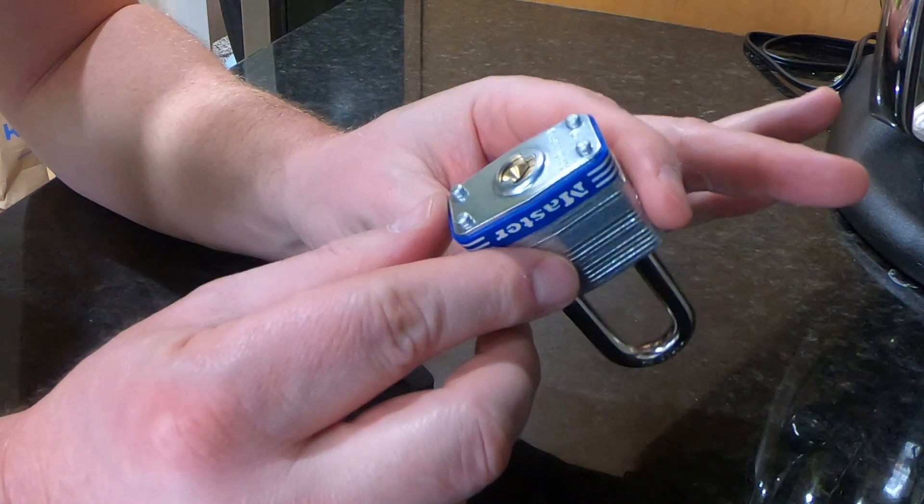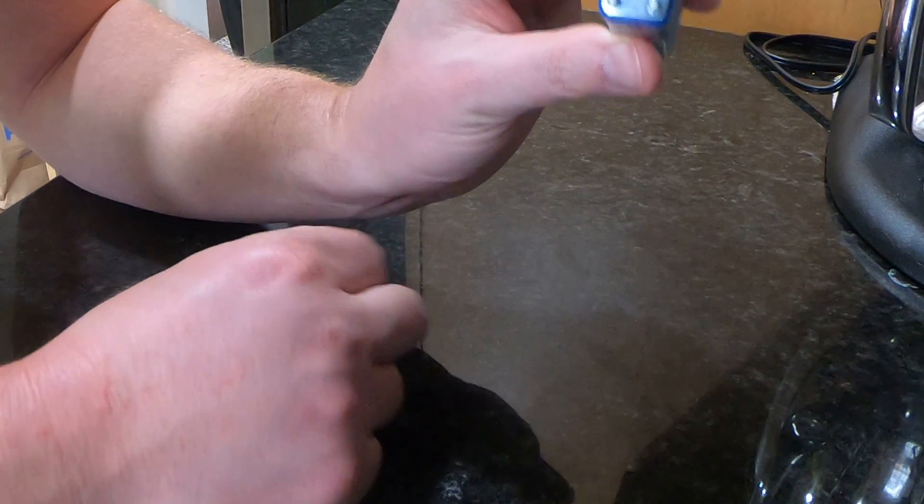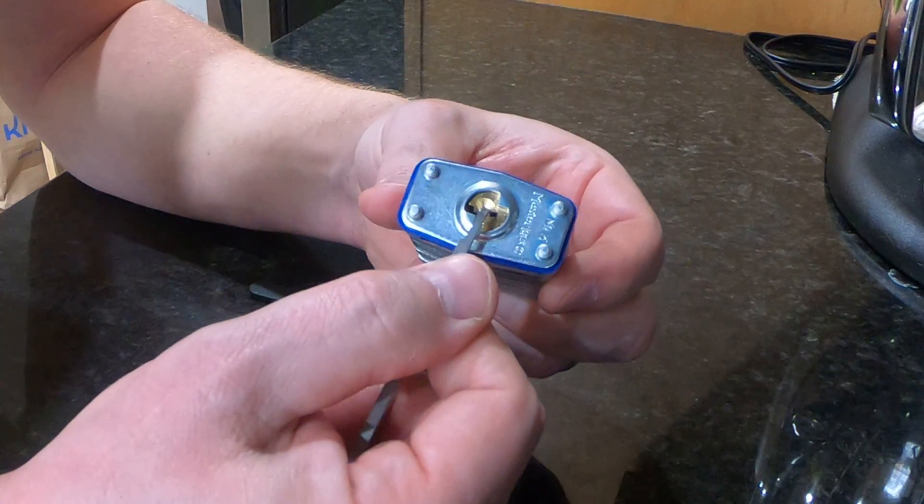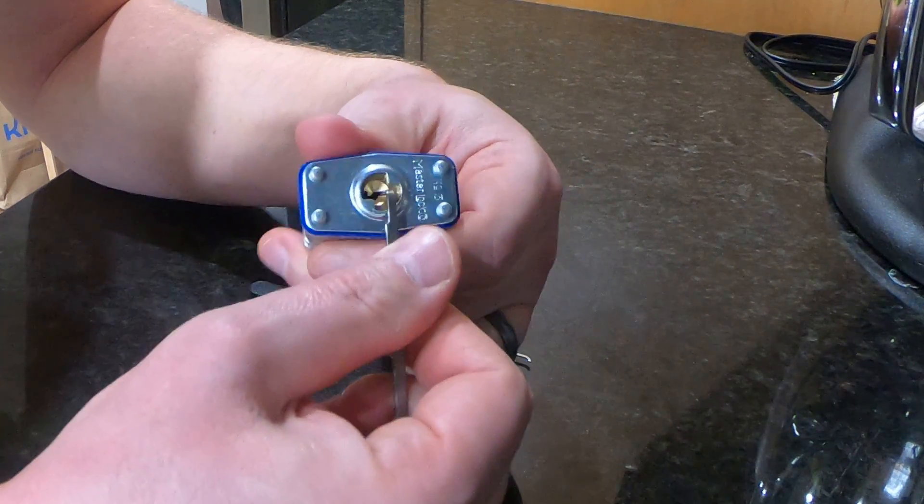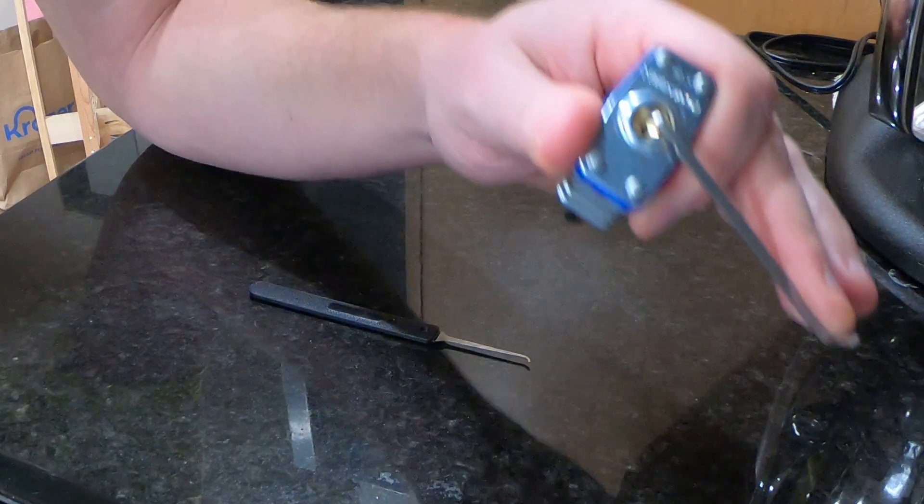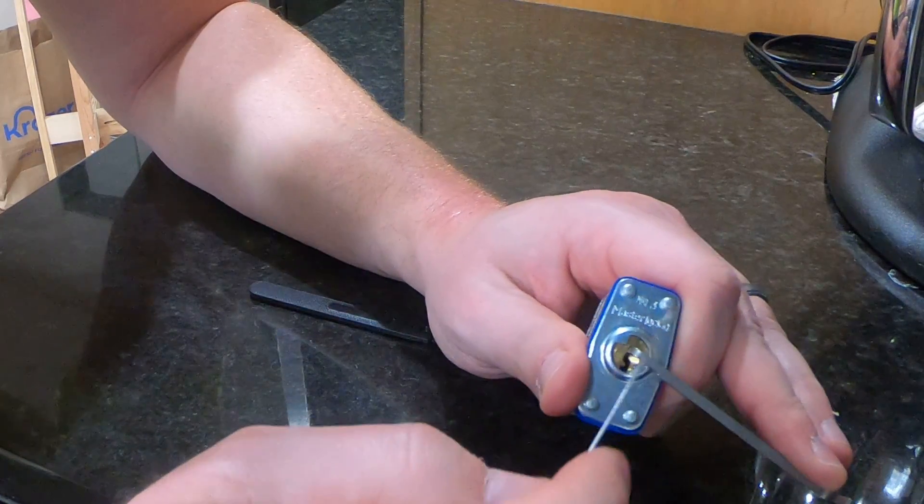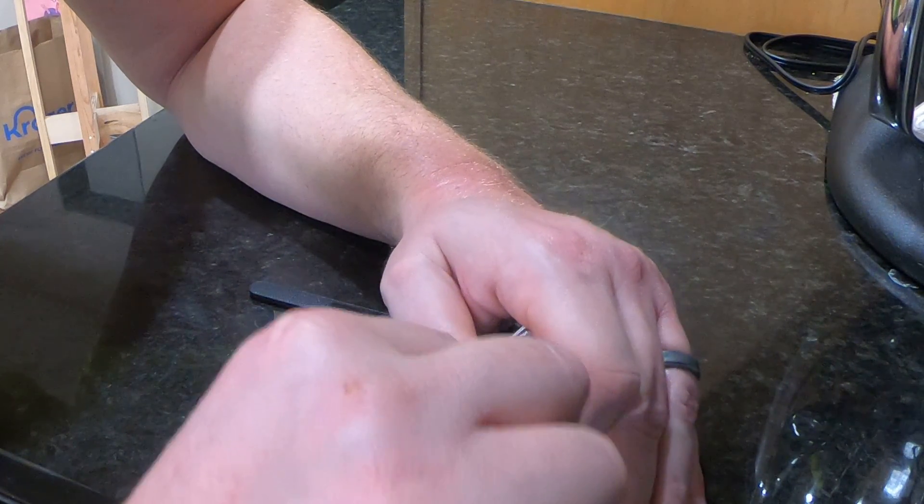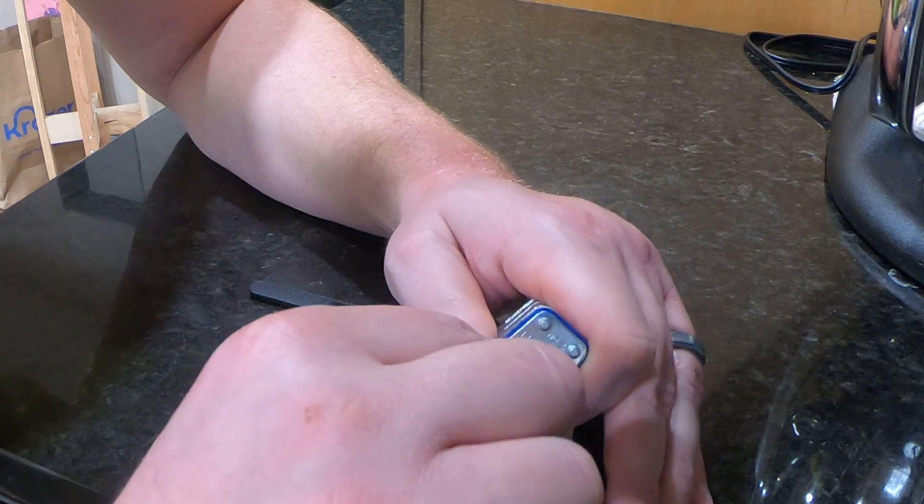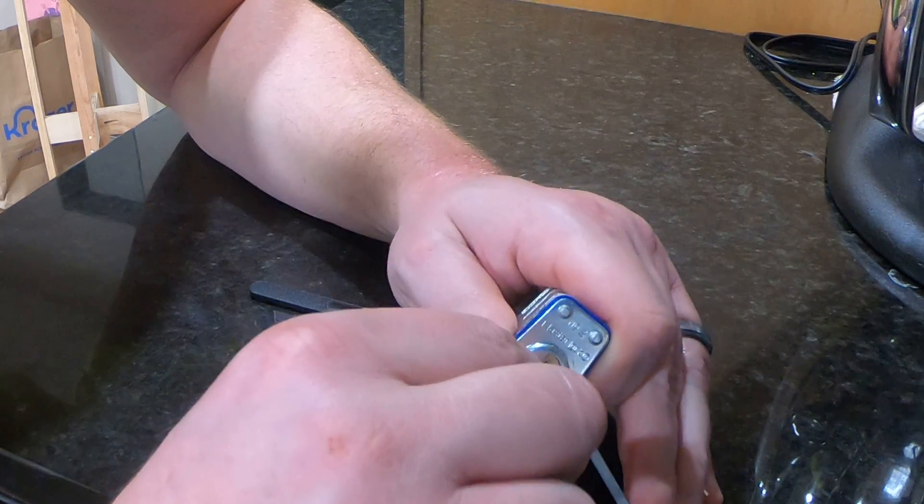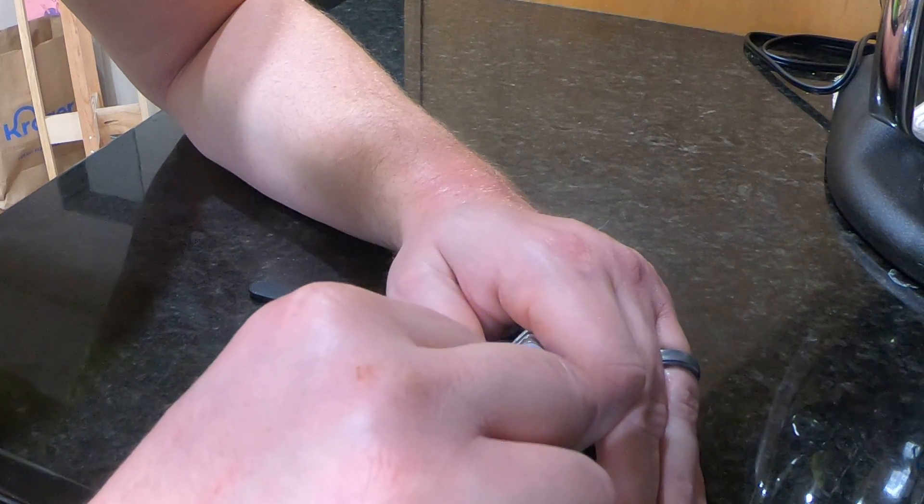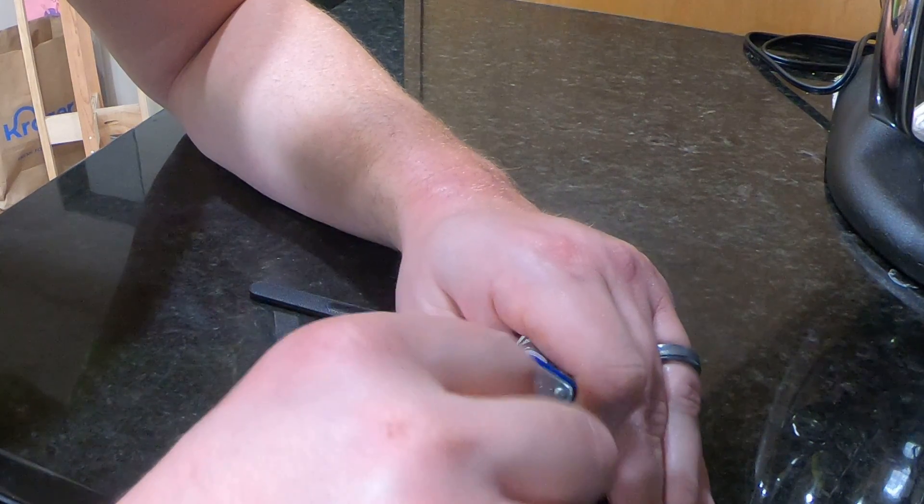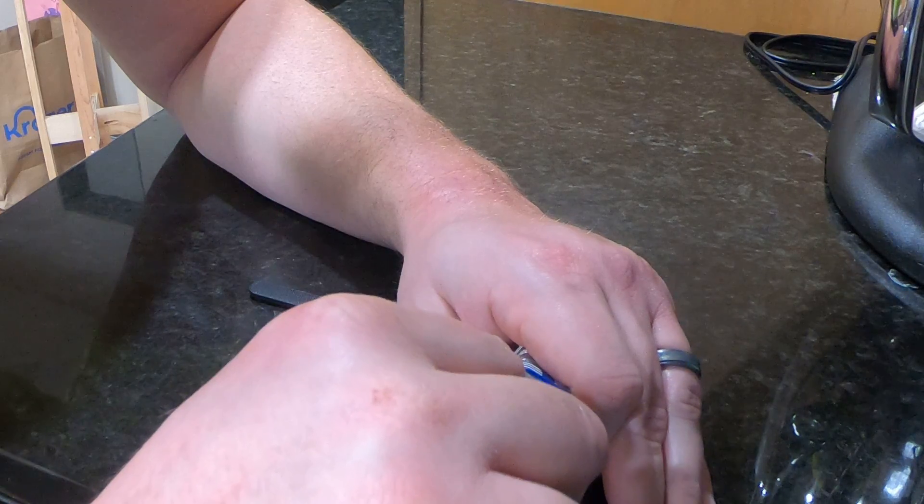We're gonna use top of keyway tension and a standard hook, and we'll see if we can get this open. One feels springy, two could be binding, I'm not positive. Yeah, I got a click on two. Three was binding for sure, click on three. This does have four standard pins in it, I believe.